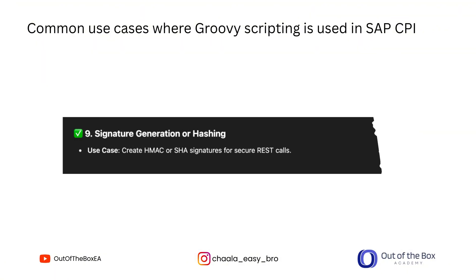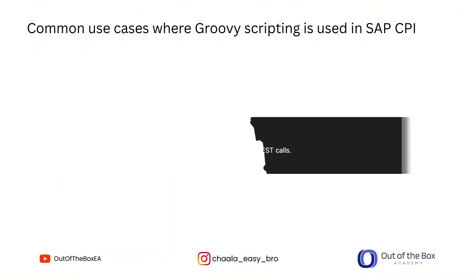Ninth, security — hashing or signature generation. You can use Groovy scripting to generate HMAC or hash signatures to secure API calls, which is crucial for modern REST-based integrations. You can do all kinds of creative security-related work using Groovy scripting.